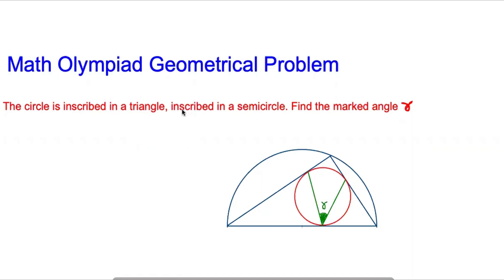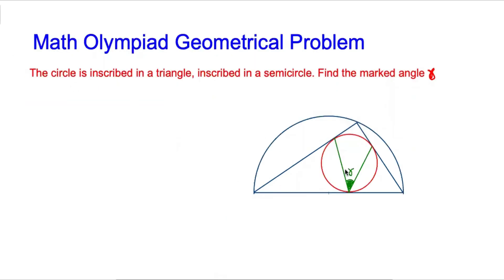The question is that a circle is inscribed in a triangle, inscribed in a semicircle. Find the marked angle gamma. The red circle you see here is inscribed in a triangle — we name it as A, B, and C — and this triangle is inscribed in a semicircle. We have to find the angle gamma, shown in green-red.